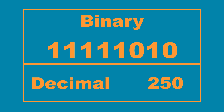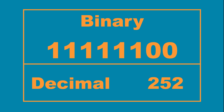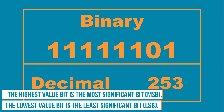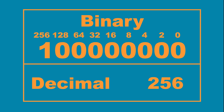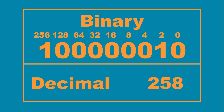Binary is base 2, meaning it counts up to 1, then rolls over to the next place: 0, 1, 0, 1. Every time the number rolls over, another bit is added. If we continue counting up in binary and comparing those numbers to their decimal equivalent, we can see which decimal number each place represents: 0, 2, 4, 8, 16, and so on. You can see that each bit is twice that of the previous bit.